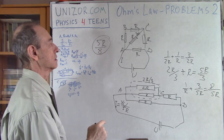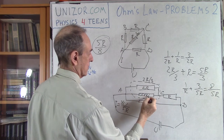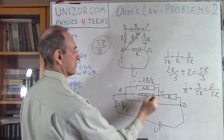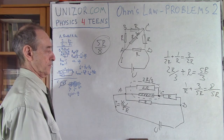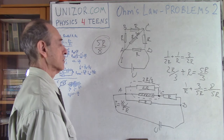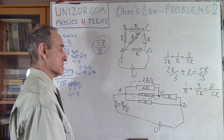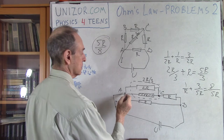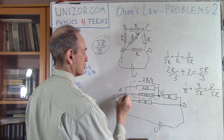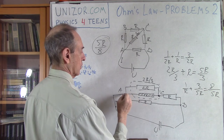But I'm interested in the diagonal current. I know the resistance, so I need to know the difference in potential between A and C. I can do it by noting that I know the difference in electric potential between A and D, which is U. From A to D I have one resistor of 2R/3 and another of R, so the voltage drops — first by one, then by the other.